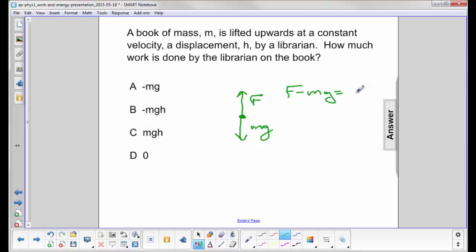But before I write ma, this object is moving at a constant velocity, zero acceleration. So f minus mg equals zero. The force exerted by the librarian on the book is mg.